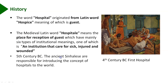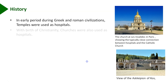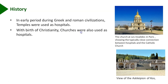In the 5th century BC, the ancient Sinhalese are responsible for introducing the concept of hospitals to the world. In the early period, during Greek and Roman civilizations, temples were used as hospitals. With the birth of Christianity, churches were also used as hospitals. We can see the church at Les Invalides in Paris, showing the typically close connection between hospitals and the Catholic Church.